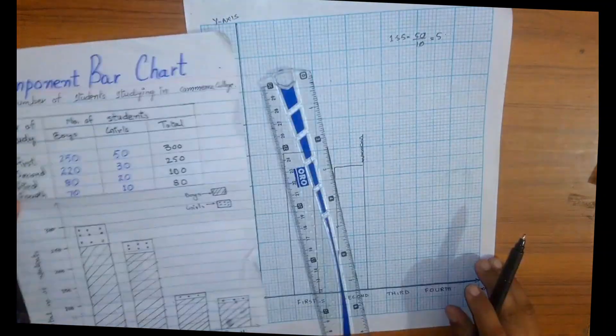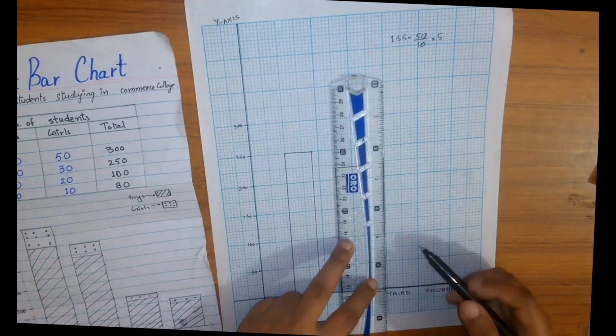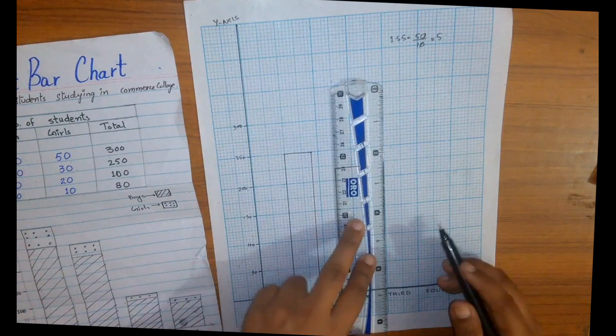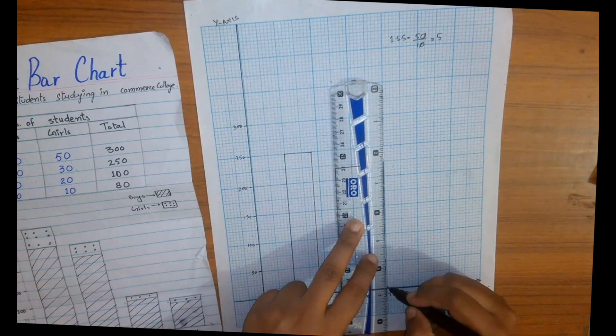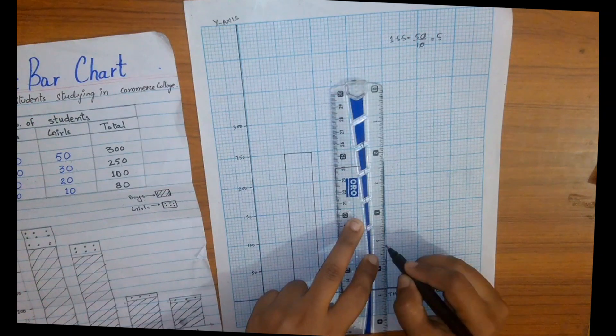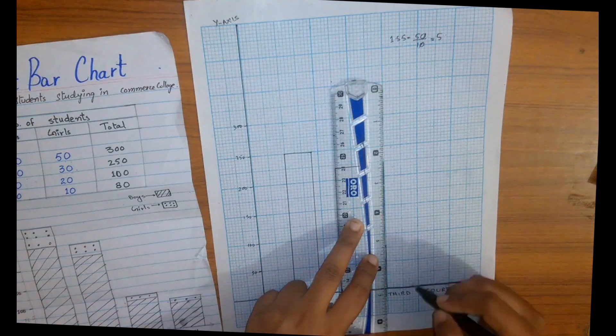In third year we have 80 boys. 50, two boxes 60, two boxes 70, and another two boxes makes 80.